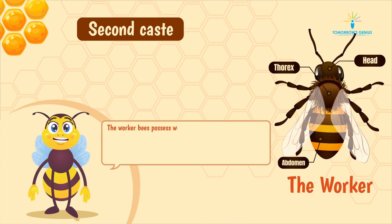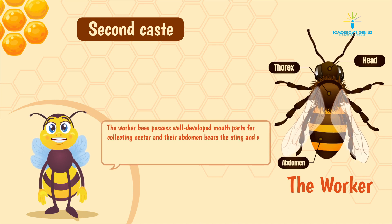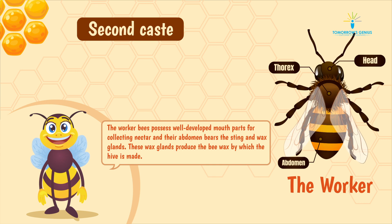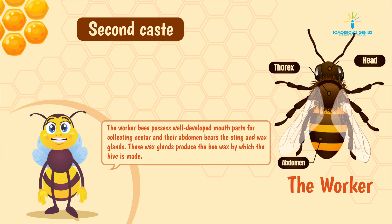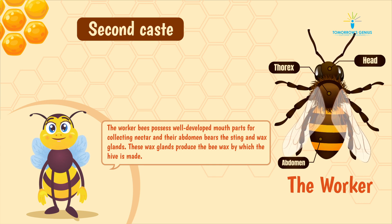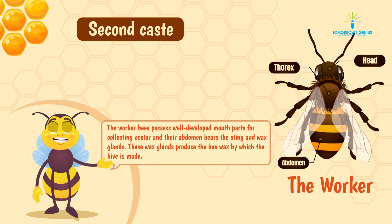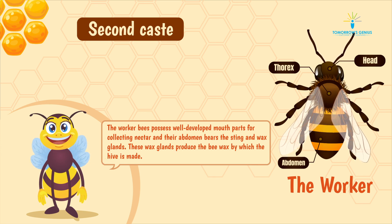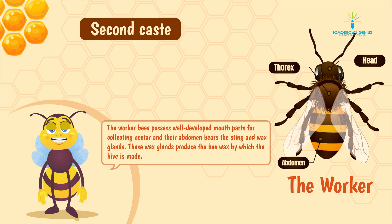The worker bees possess well-developed mouth parts for collecting nectar, and their abdomen contains the sting and wax glands. These wax glands produce the beeswax by which the hive is made.